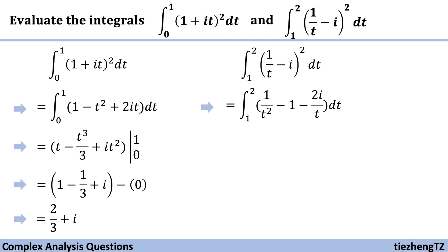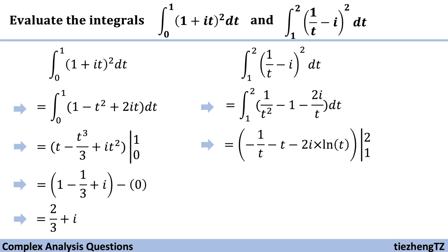Next step, we need to find the antiderivative for each part within the parentheses. The antiderivative of 1/t² is -1/t, the antiderivative of -1 is -t, and for the third part, -2i/t, since the antiderivative of 1/t is ln(t), its antiderivative is -2i·ln(t), evaluated from one to two.